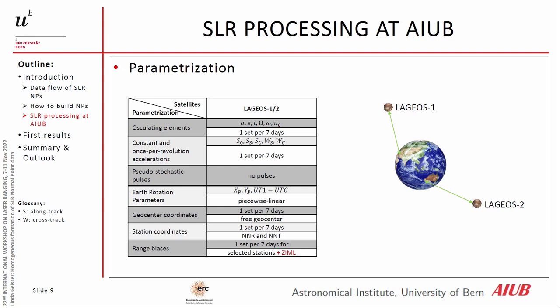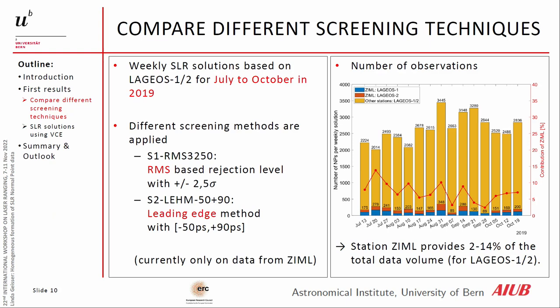For this comparison we only look at data from LAGEOS 1 and 2. What is also special is that we now also estimate range biases for Zimmerwald, because we use another technique to generate the normal points and the center of mass corrections may not be correct. We have two screening methods — the RMS-based rejection level and the leading edge method — and we look at weekly SLR solutions from July to October 2019, changing only the data from Zimmerwald, which contributes 2 to 14 percent of the total data volume.